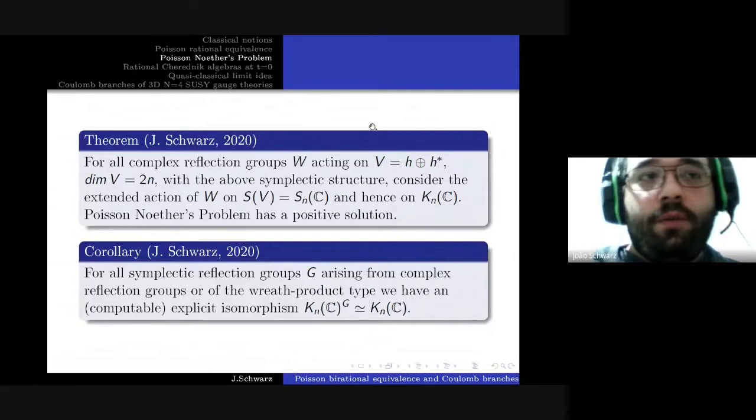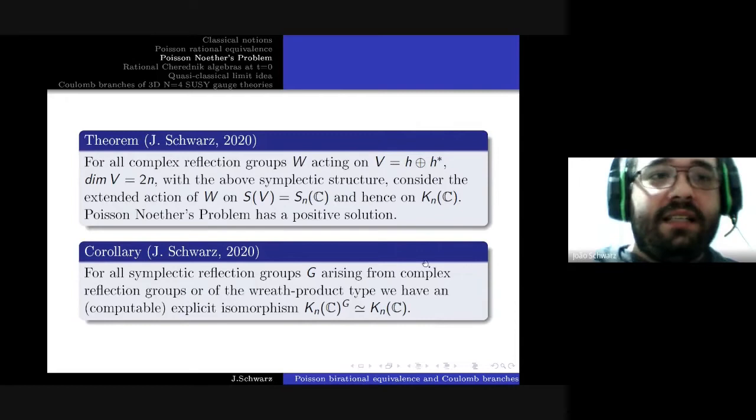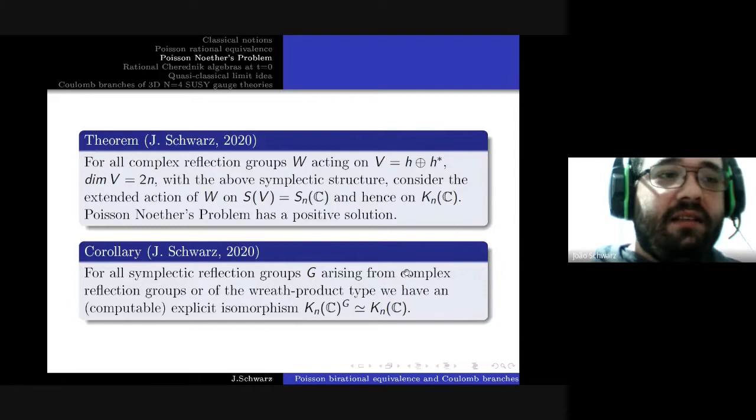This is where symplectic resolutions of singularities fail us: complex reflection groups can be decomposed into irreducible pieces, and except for irreducible complex reflection groups with the exception of the cyclotomic ones and one of the 34 exceptional cases, there are no symplectic resolutions of singularities. Our approach has an advantage here.